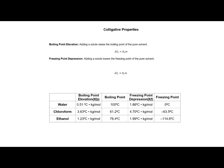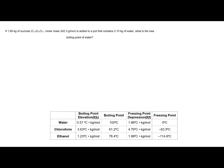Let's work some problems. If 1.6 kilograms of sucrose is added to a pot that contains 2.10 kilograms of water, what is the new boiling point of water? Let's first identify our solvent and find our constant. We're looking for the new boiling point of water, so water is our solvent. Looking at our table, we want the boiling point elevation constant. As a reminder, the boiling point of pure water is 100 degrees C.